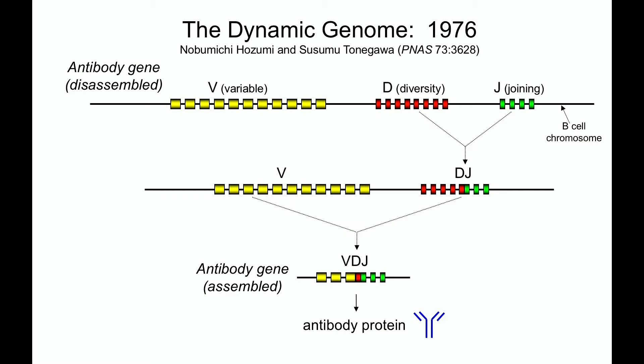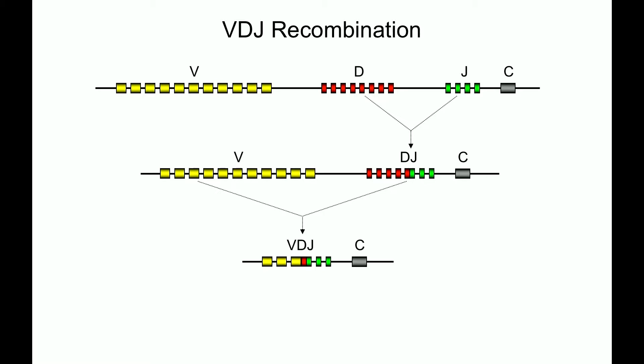This process is known as VDJ recombination for obvious reasons. The first thing you might wonder is: why bother? Why go to all this trouble messing with your chromosome? And the answer is diversity.